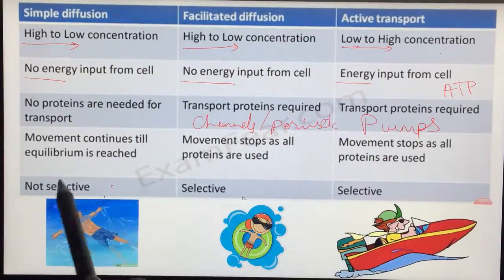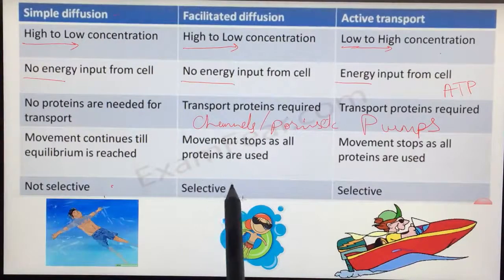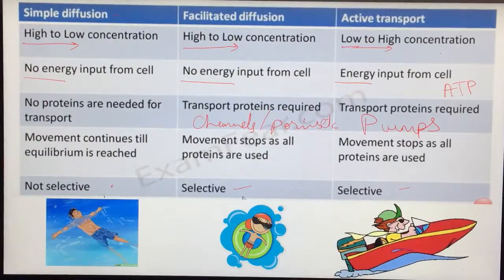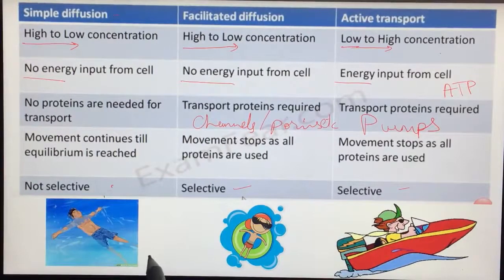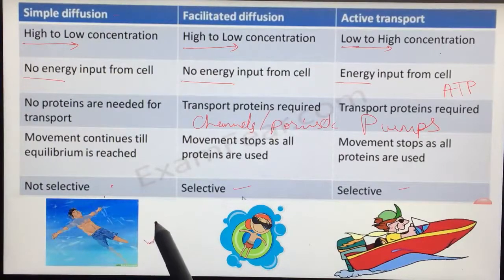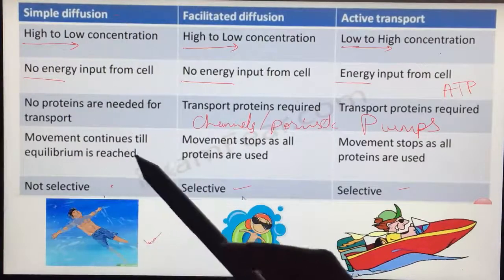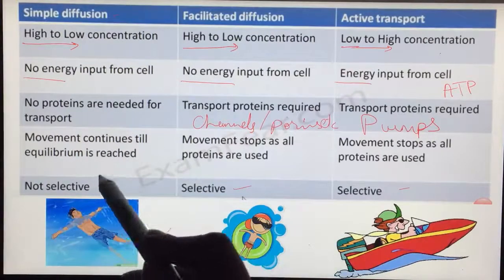Diffusion is very non-selective. Facilitated diffusion is selective comparatively and active transport is highly selective. So to make it easy, I've made these pictures here. Simple diffusion is like floating. The molecules would go from higher concentration to lower concentration. They don't need any energy input and they are not selective. Anybody can swim and reach anywhere.